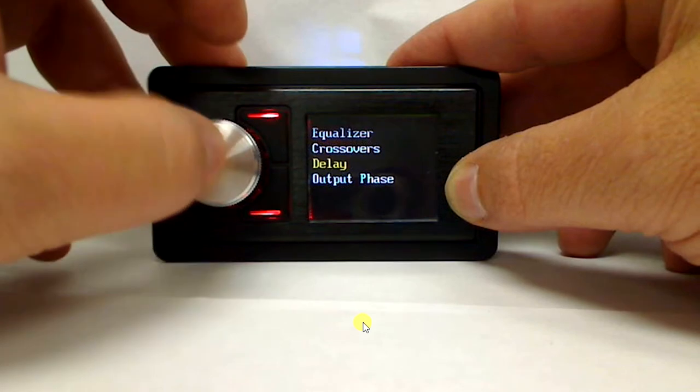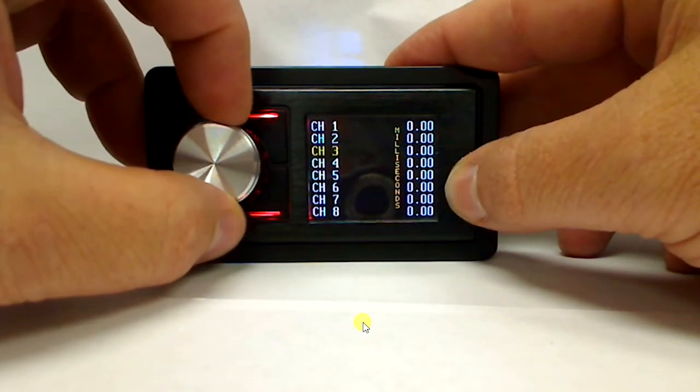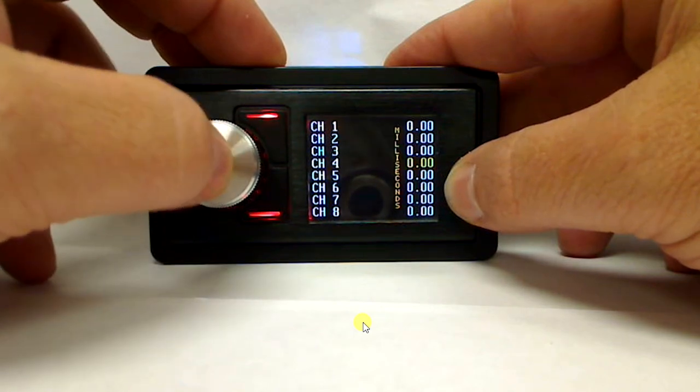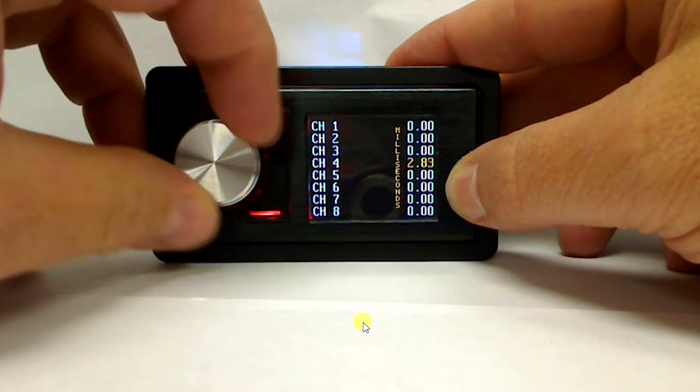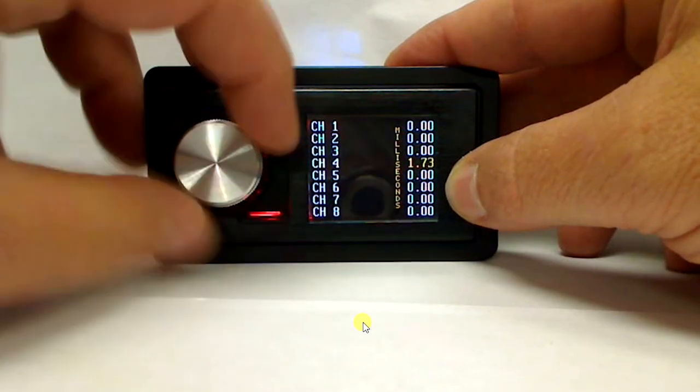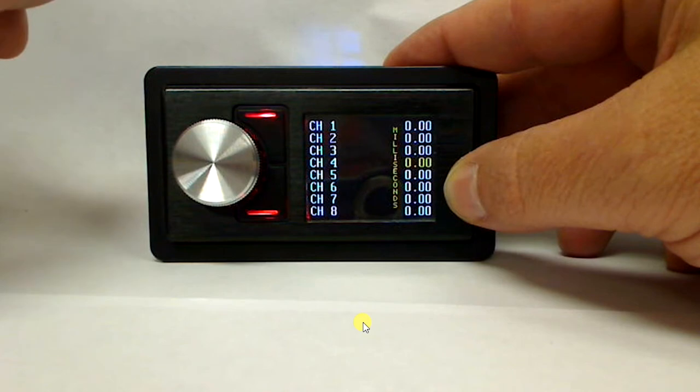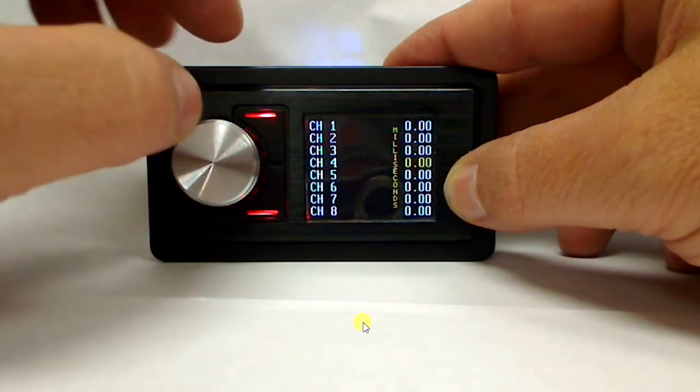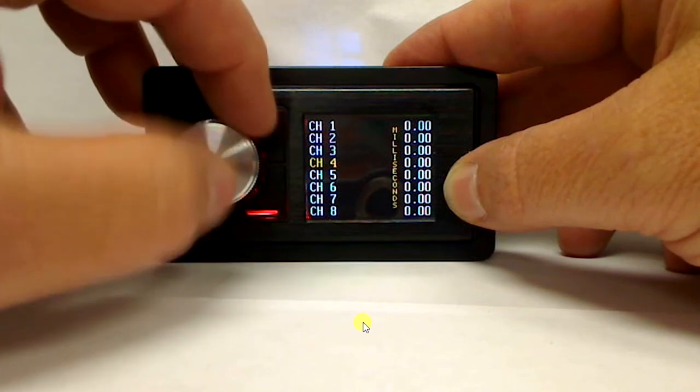Now we're going to go ahead and back up and we're going to go to delay. Here you go in delay and you can come in to, say, channel 4, and we're going to go ahead and adjust the delay. Right now I have my delay displayed in milliseconds, which was something you can define in the parameter section back on the main screen or through your GUI as well.